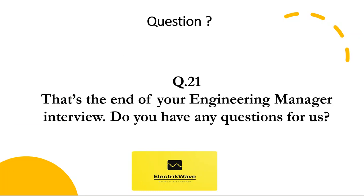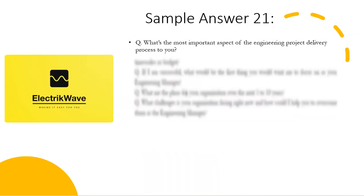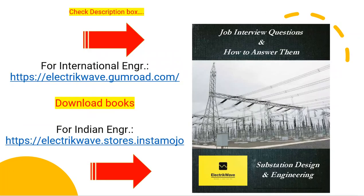Question number 21: that's the end of your engineering manager interview. Do you have any questions for us? Sample answer 21 — question to ask the interviewer, question number 1: what's the most important aspect of the engineering project delivery process to you? To know more about various questions and answers, the ebook link is given in the description box — download it and get ready for the interview. Thank you.